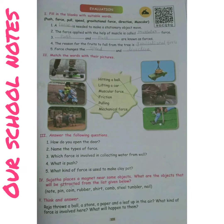Third: dash and dash are known as forces — answer is push and pull. Fourth: the reason for the fruits to fall from the tree is dash — answer is gravitational force. Fifth: force changes the dash and dash — answer is speed and direction. Next: match the words with the picture.